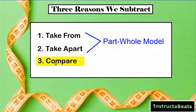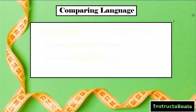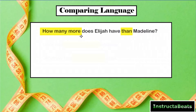Today we are going to focus on when we are comparing. When we are comparing using addition and subtraction, we would use our additive comparison model. Before we start using the additive comparison model, what type of language would you see in a problem if you were comparing? What's our comparing language? You might see a question that says, how many more does Elijah have than Madeline? That highlighted part — how many more than — means that we're comparing something, comparing two different things. In this case, we're comparing whatever Elijah has with whatever Madeline has.